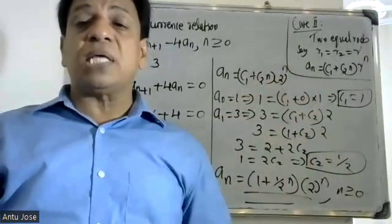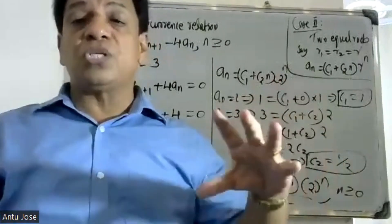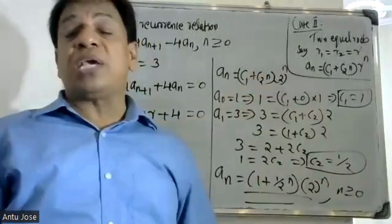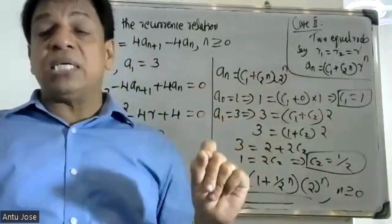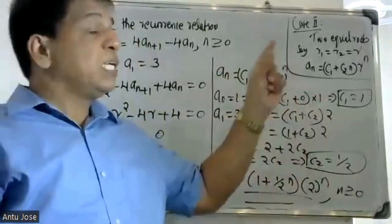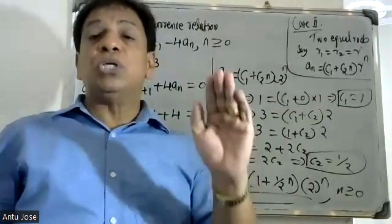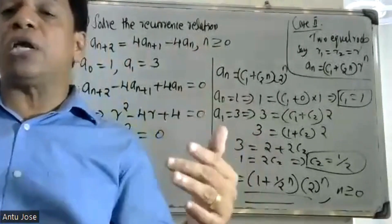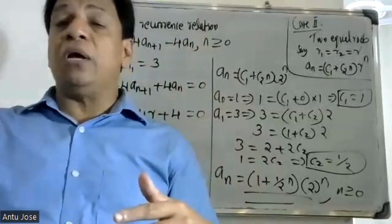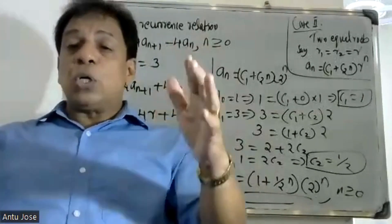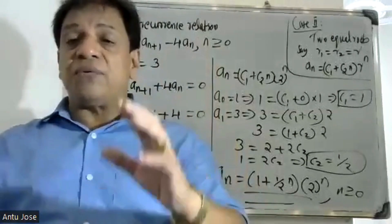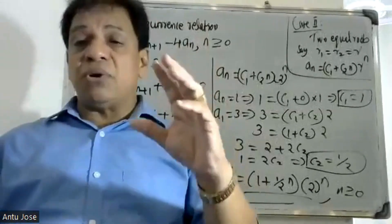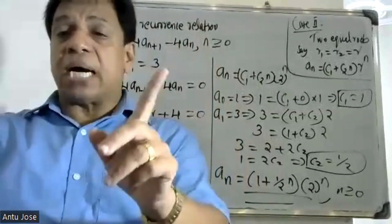In Case 2, when the roots are equal — that is, repeated roots — the solution takes the form a(n) = (C1 + C2·n) · r^n, where r is the repeated root. That is the general solution for the case of repeated roots.